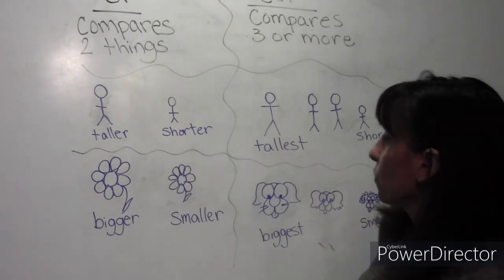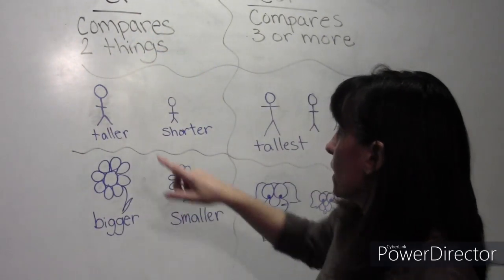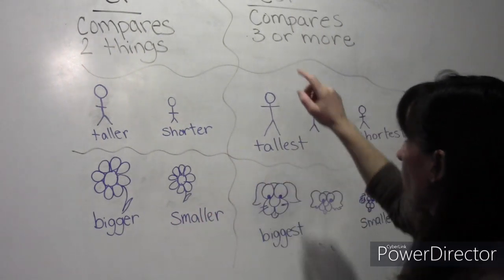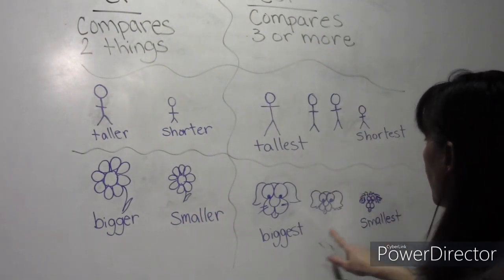So whenever we're doing two things, we compare using ER. And whenever we have more than two things, we compare using EST.